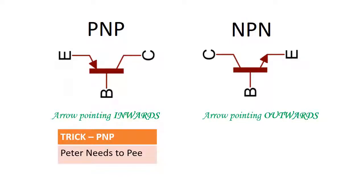For PNP we will use this trick: Peter needs to pee. So Peter needs to pee urgently, so he has to go inside to pee. And from the first letters of these words you can derive P, N and P. So this is a really simple trick and easy to remember.